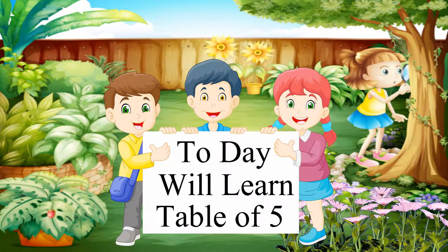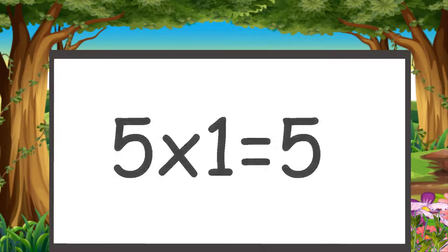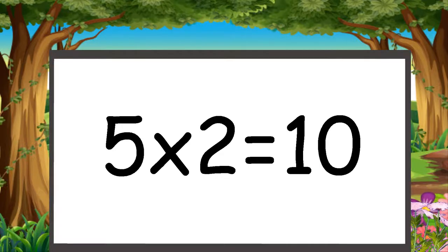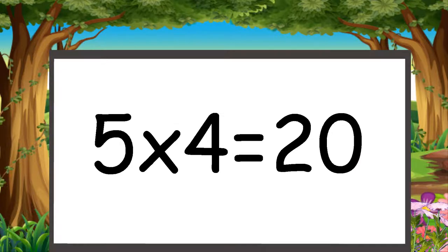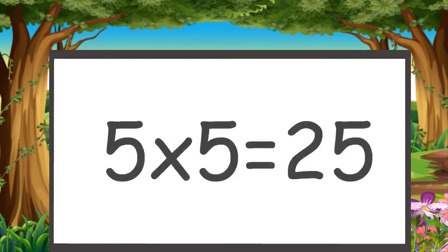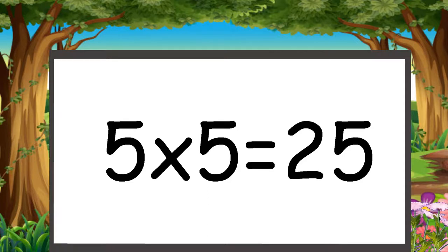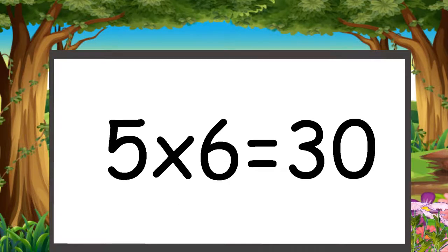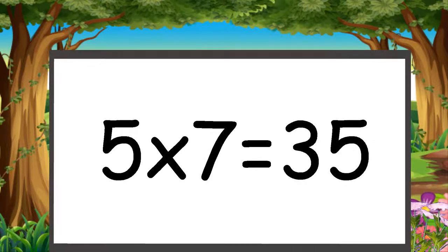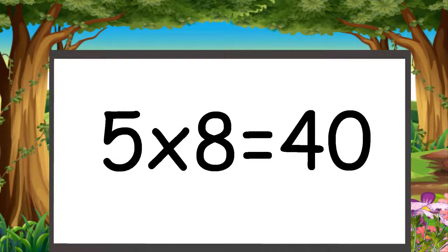Today we will learn table of five. Five ones are five, five twos are ten, five threes are fifteen, five fours are twenty, five fives are twenty-five, five sixes are thirty, five sevens are thirty-five, five eights are forty.